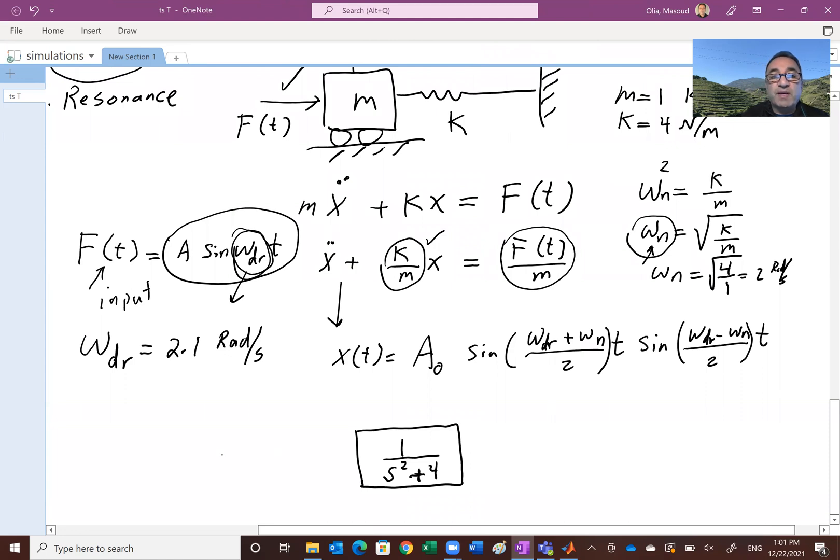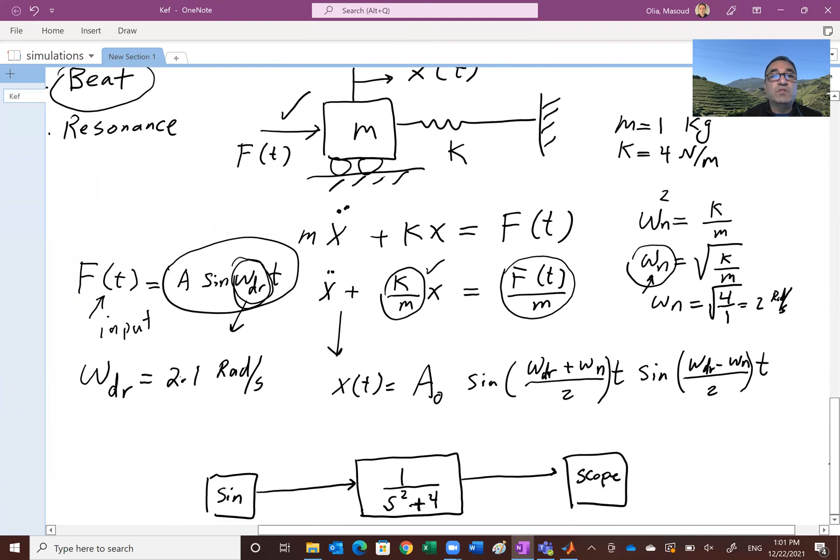So you've seen in the past that we're going to bring a sine wave, and that would be our input. We're going to hit the transfer function or our plant with this, and then you're going to have a scope. So I'm going to show you two cases, actually. One case would be the concept of beat, which is this guy, the driving frequency is very close to the natural frequency. And the other one is the concept of resonance, which is when the driving frequency or input frequency is exactly the same as the natural frequency. So in other words, I'm going to pick a two here, which is the same as the two here. And then that's known as the resonance.